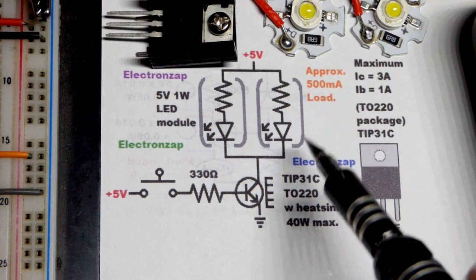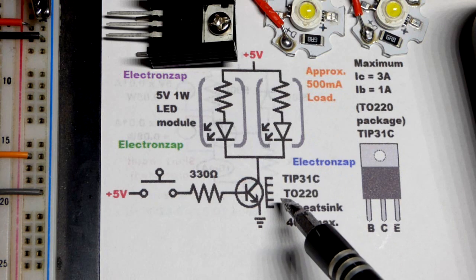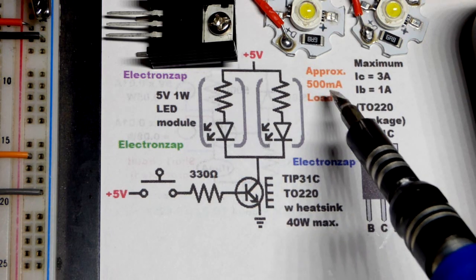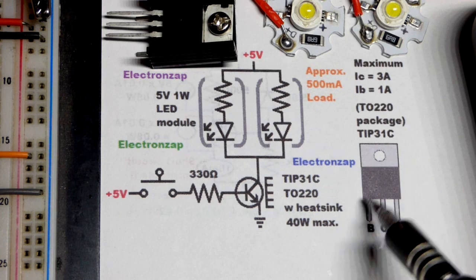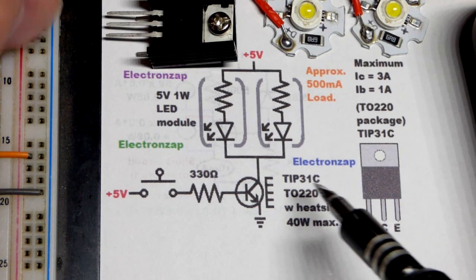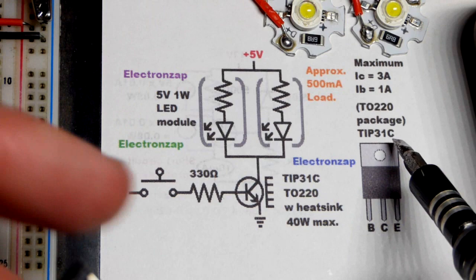So we want to step it up. You don't want to go close to the maximum at all times, and the 2N3904 has a 200 milliamp limit. We could do this without the heat sink, but we're using the TIP31.